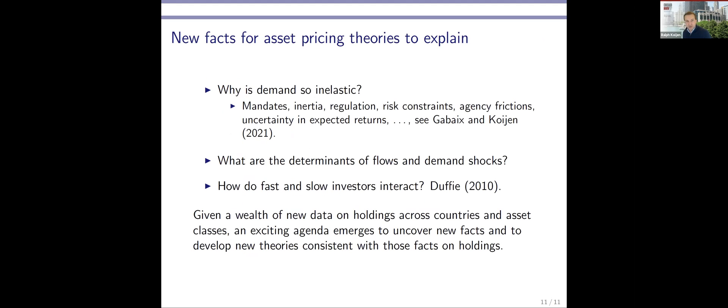Let me as a last slide talk a little bit about asset pricing theory or macro finance theory. I think some of the new facts that have been documented raise a lot of interesting questions. First of all, we don't really know why demand is so inelastic. In the paper with Xavier, we explore some of these, but I think there's a lot more to be done. It could be related to institutional mandates, it could be inertia, perhaps regulation plays a role, it could be risk constraints, perhaps it's agency frictions, perhaps it's very hard to estimate expected returns and so I don't really know how much expected returns change - I'm not going to change my portfolio all that much. All of those are reasonable possibilities and truly understanding why investors don't seem to respond very much to prices is an important question.